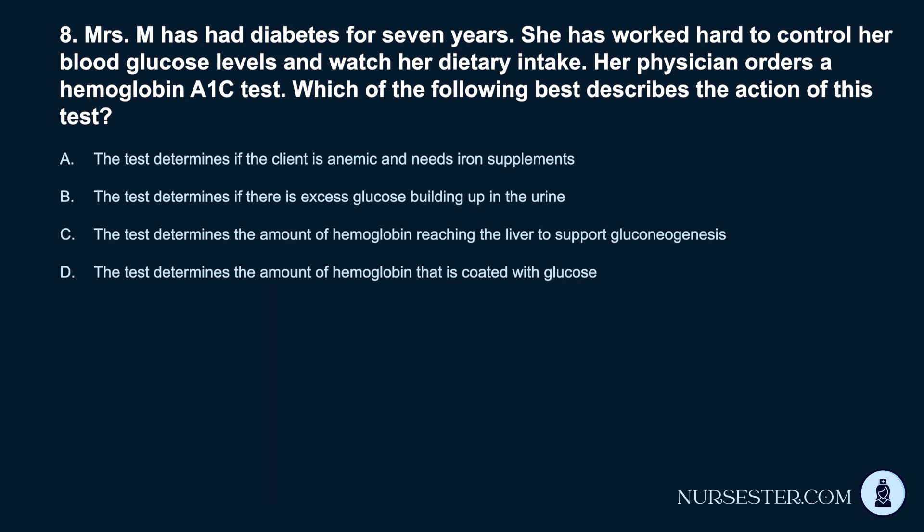Question 8. Mrs. M. has had diabetes for 7 years. She has worked hard to control her blood glucose levels and watch her dietary intake. Her physician orders a hemoglobin A1c test. Which of the following best describes the action of this test? A. The test determines if the client is anemic and needs iron supplements. B. The test determines if there is excess glucose building up in the urine. C. The test determines the amount of hemoglobin reaching the liver to support gluconeogenesis. D. The test determines the amount of hemoglobin that is coated with glucose.